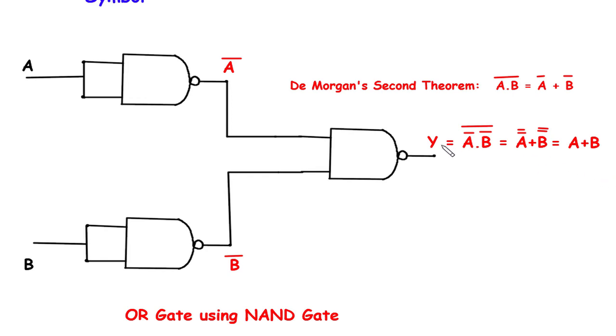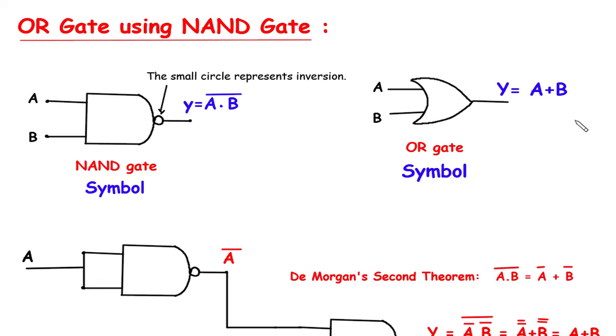The output will be y equals a plus b, which is the same as the Boolean expression for OR gate.